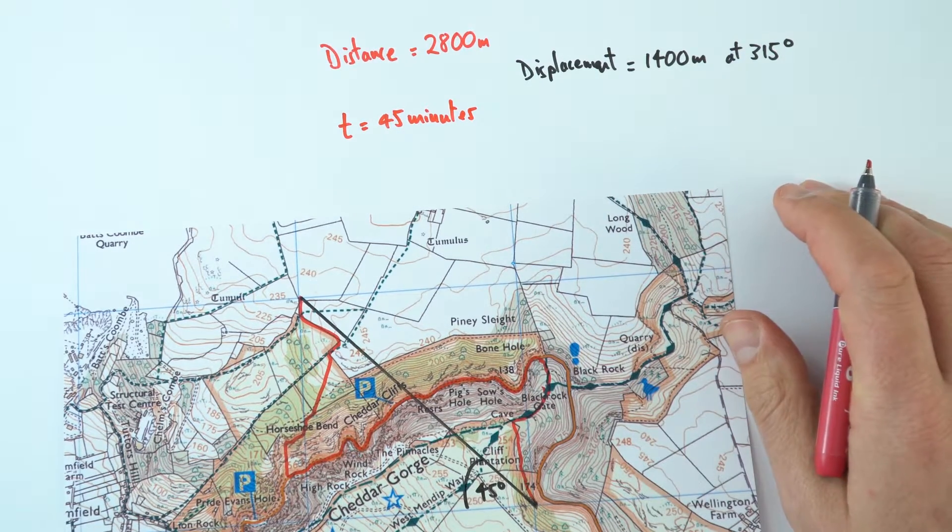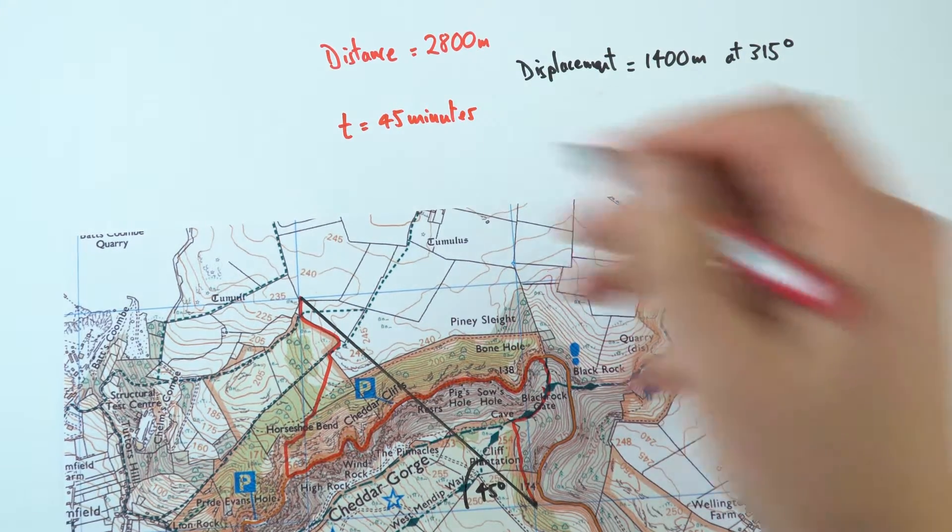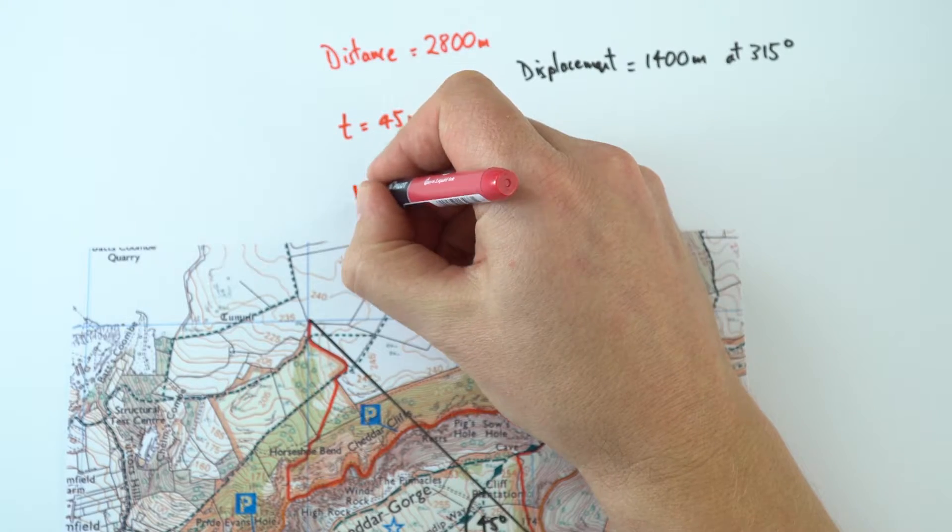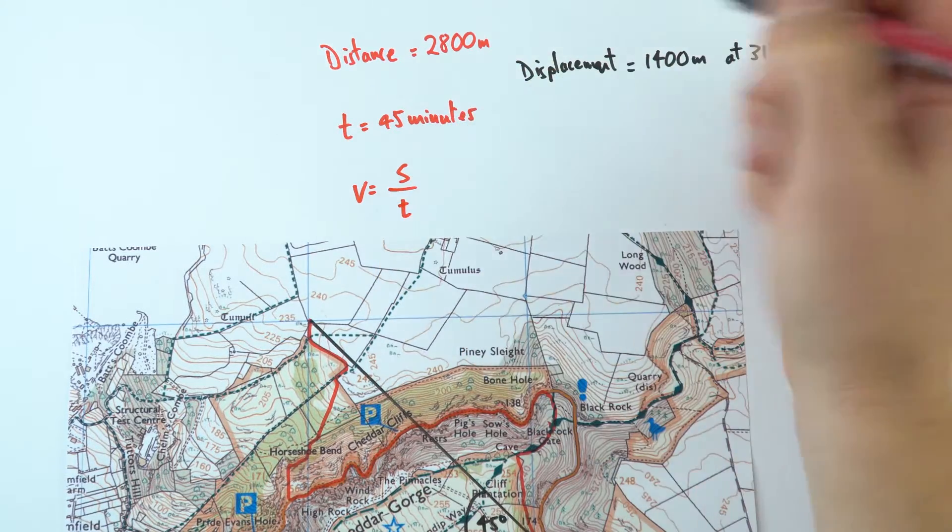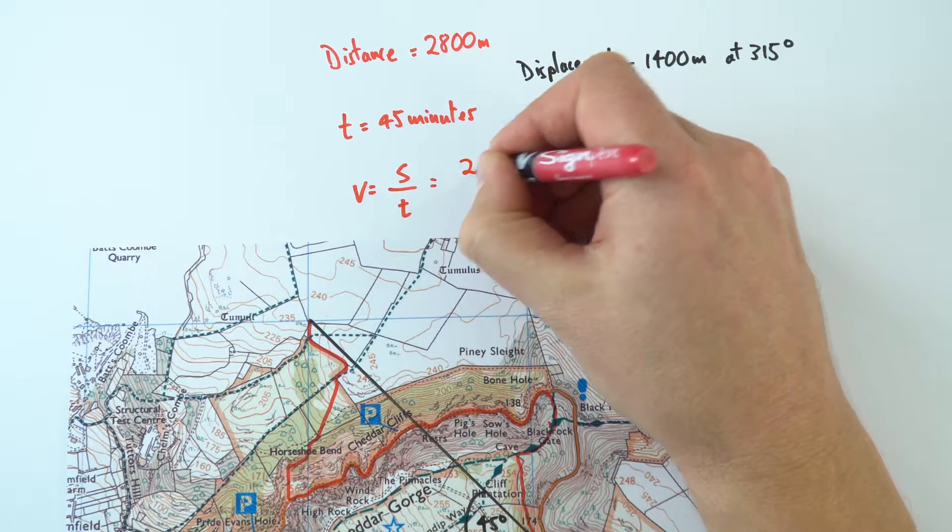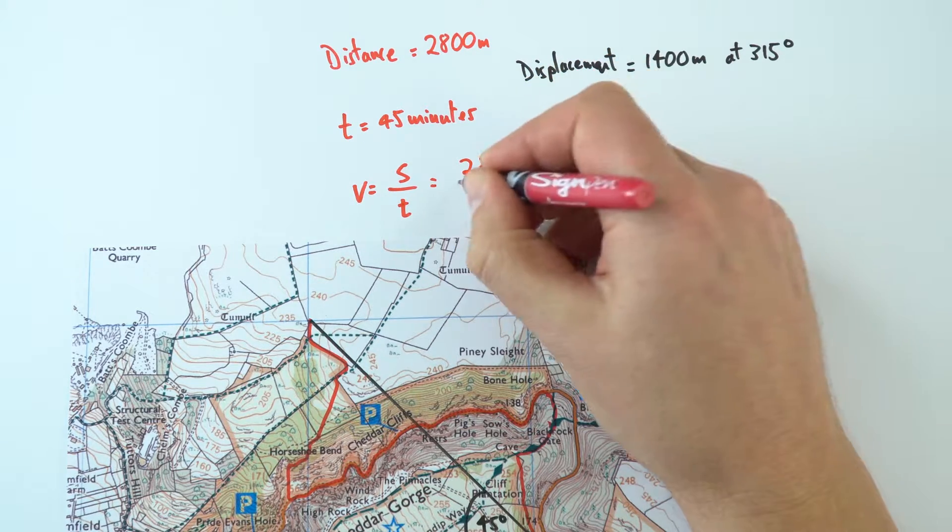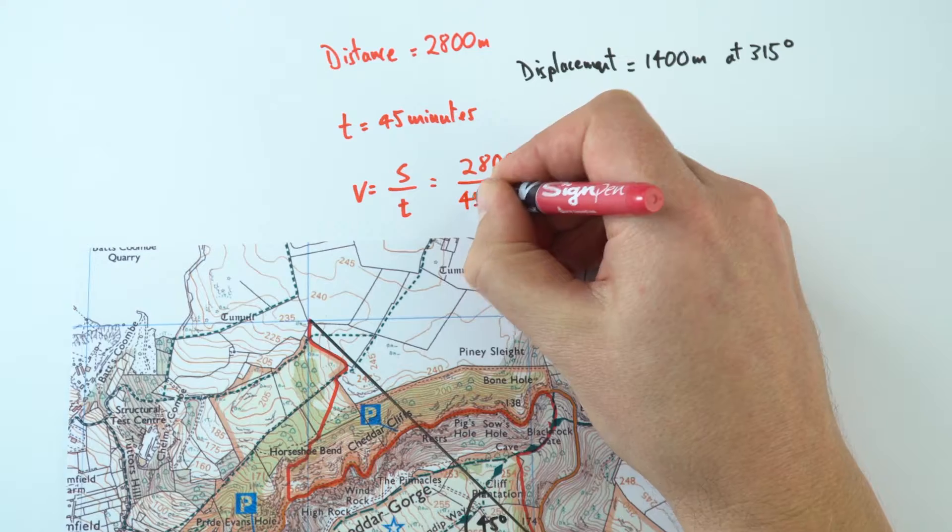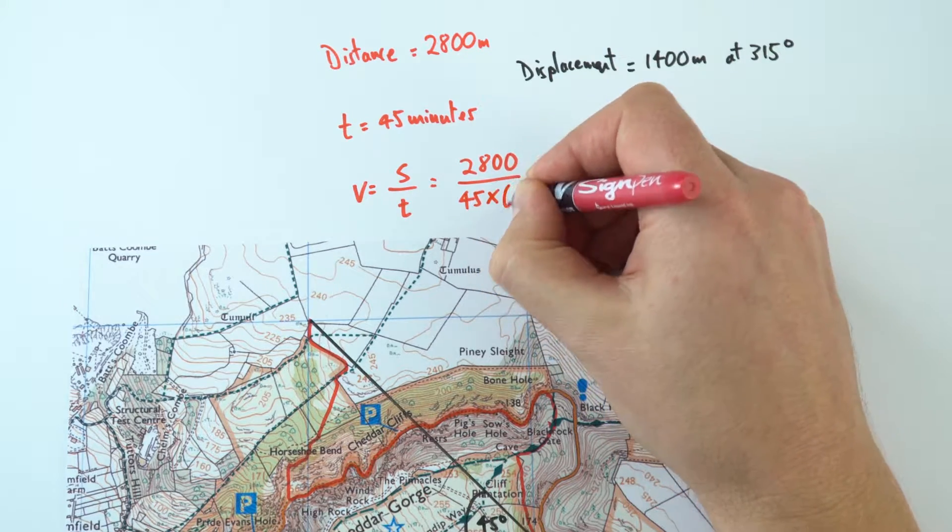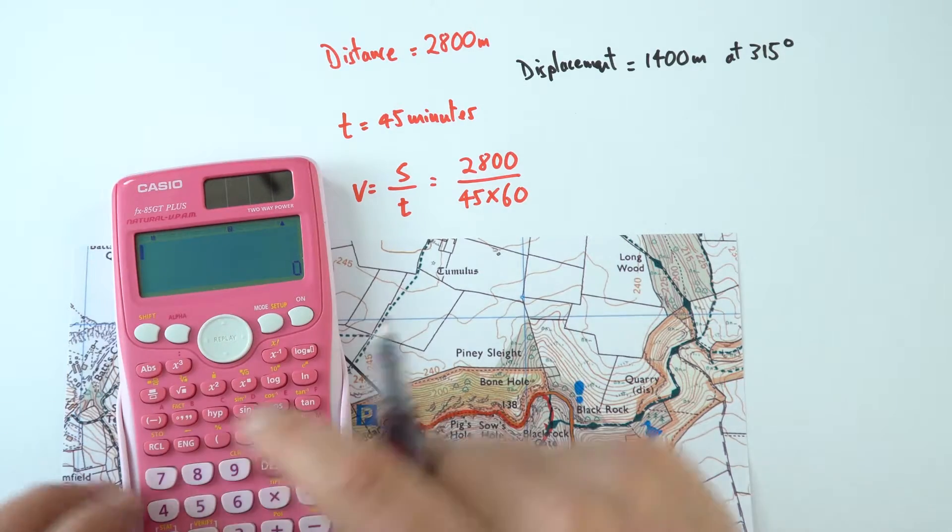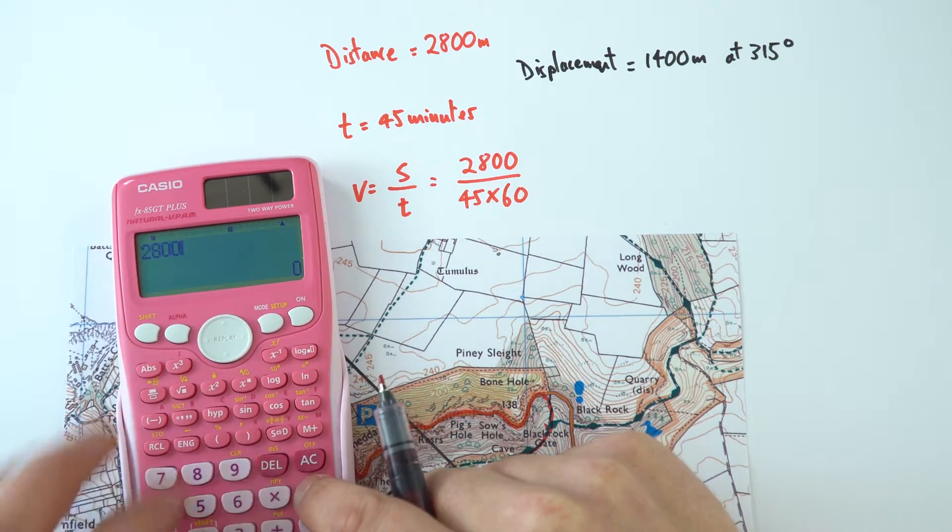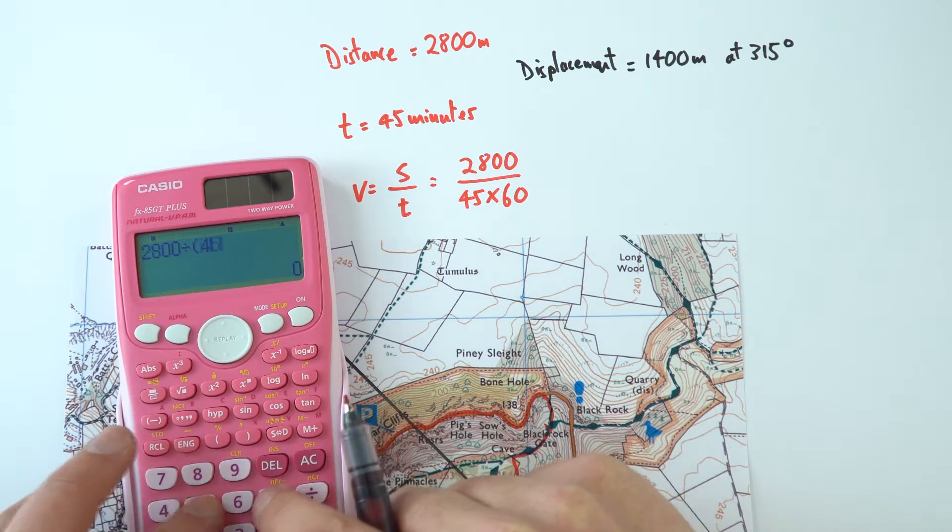And I want to work out how quickly I was traveling, so I can work out my speed. So the speed that I traveled was equal to the distance I traveled divided by the time taken. In this case, the distance was 2,800 meters, and the time was 45 minutes, but I need to multiply this by 60 to convert it into seconds. When it comes to working this out on my calculator, that's just equal to 2,800 divided by 45 times 60.